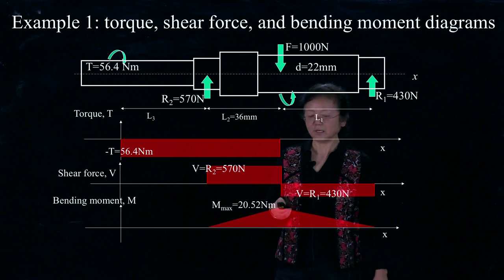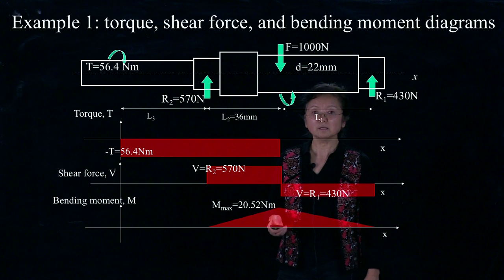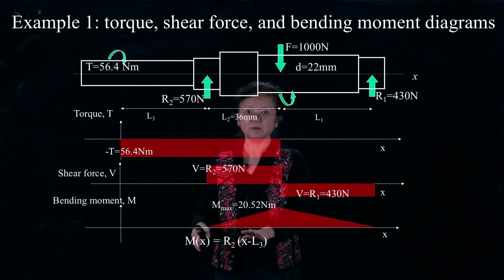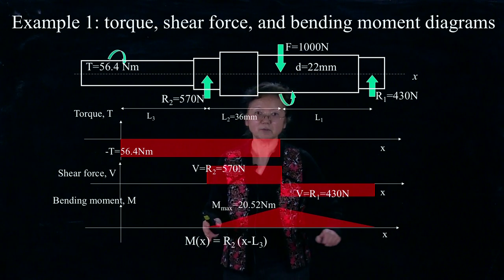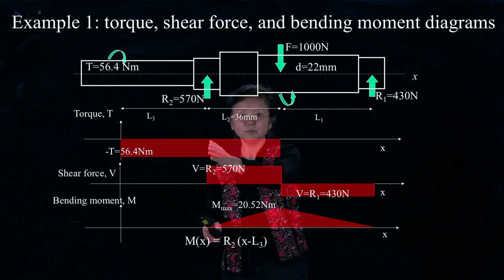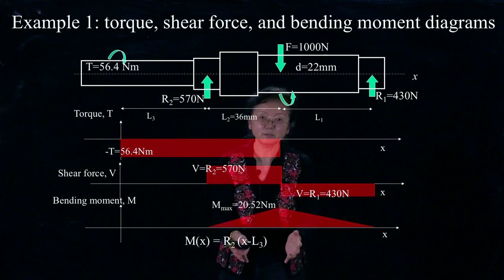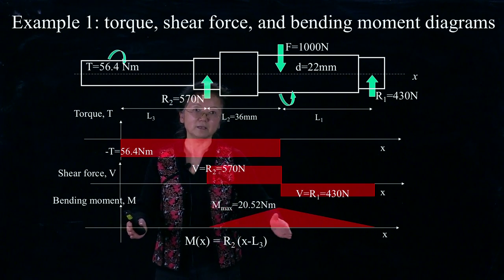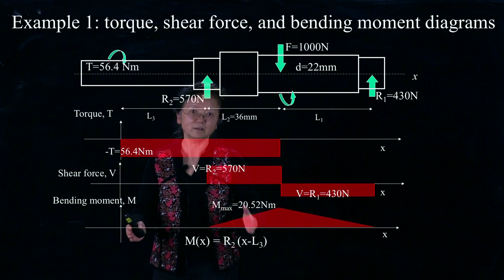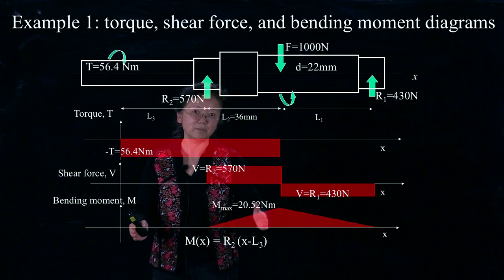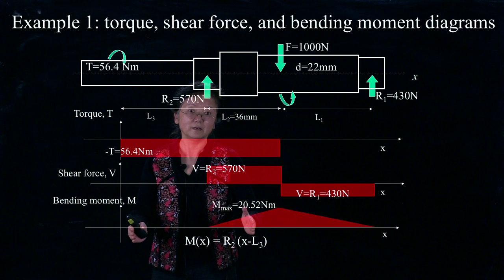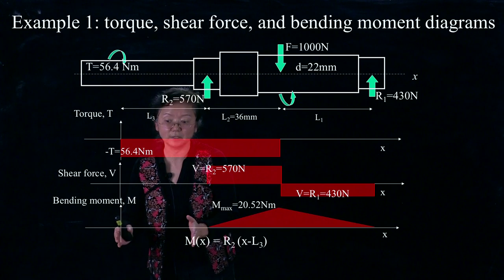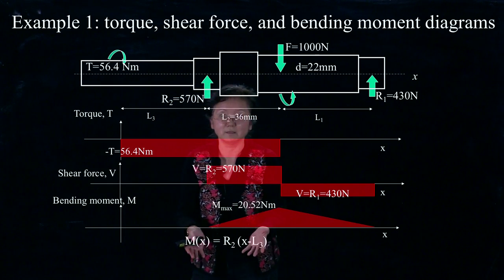But of course, you can write down moment equations. From this segment, you can write down one equation. Moment along the x direction equals R2 times distance. What is the distance? We measure x from here, so basically any x before this force application in this segment. That is x minus L2 minus L3 distance.